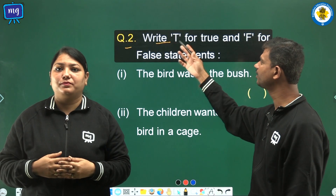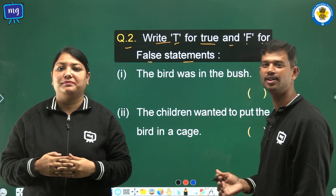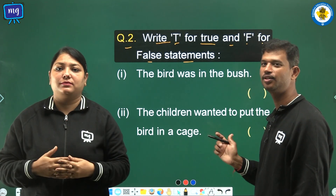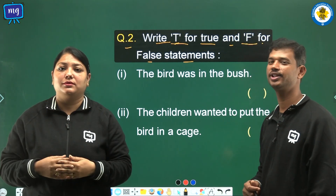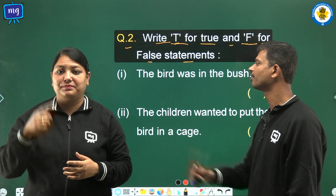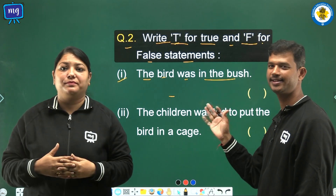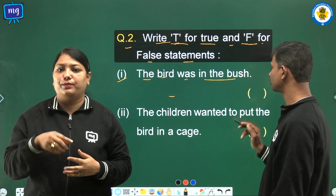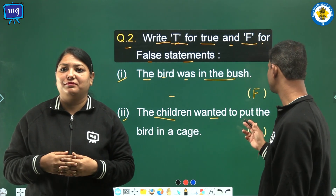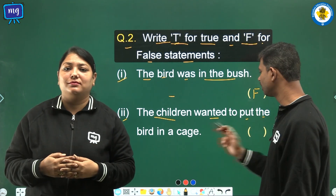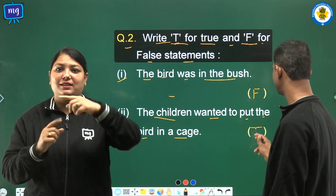Question 2, write T for true and F for false statements. You have to write T if the sentence is correct, or you will write F for a wrong sentence. First, the bird was in the bush — this is wrong, so we shall write F in the bracket. Second, the children wanted to put the bird in a cage — this is correct, so we shall write T in the bracket.